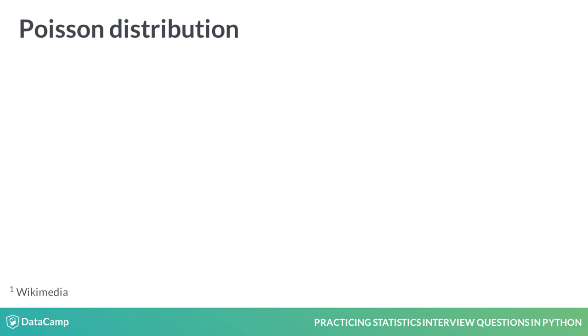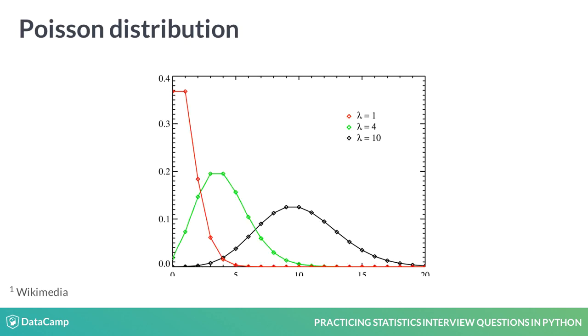Like the binomial distribution, the Poisson distribution represents a count, or the number of times something happened. It's calculated not by a probability P and a number of trials N, but by an average rate shown by lambda.